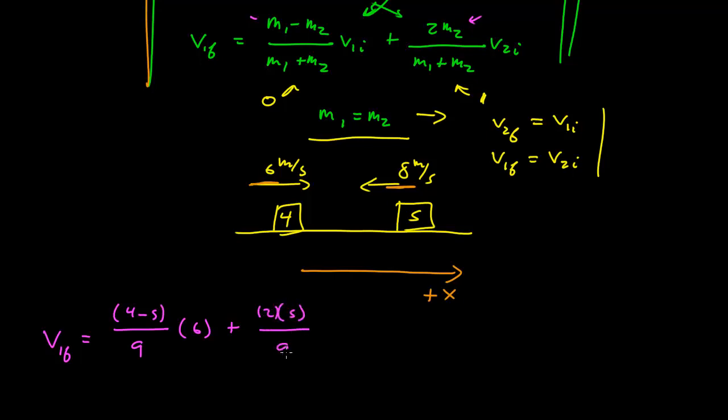See where that minus sign is important. Okay, so this is equal to minus 6 ninths minus, this is 80 ninths.